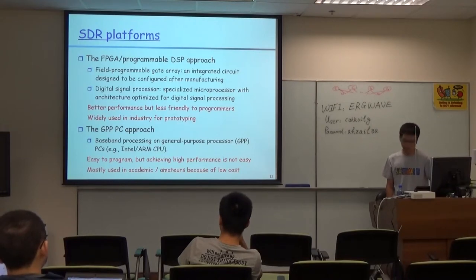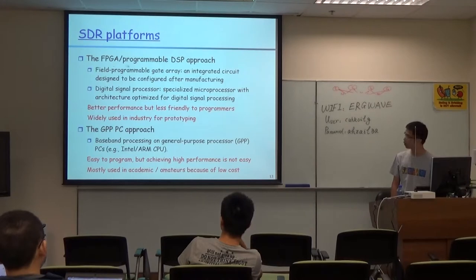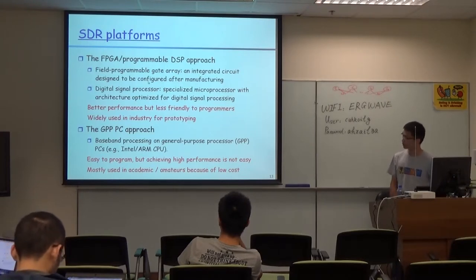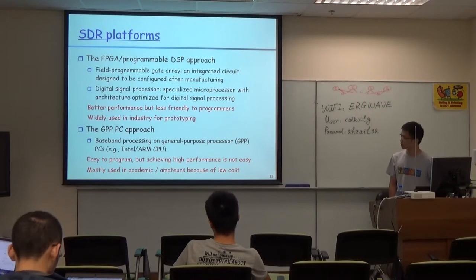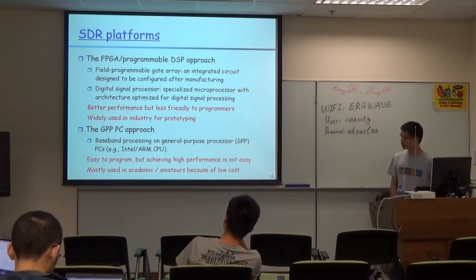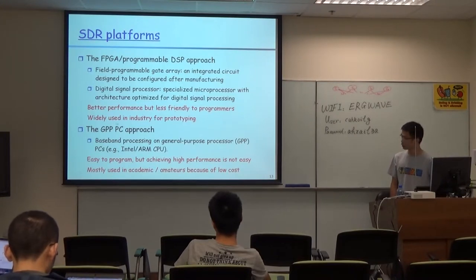There are many kinds of SDR platforms. Roughly speaking, they differ in the baseband processing parts. One kind is based on FPGA or programmable DSP. FPGA is an integrated circuit designed to be configured after manufacturing; DSP is a special microprocessor with architecture optimized for digital signal processing. This architecture has better performance, but is less programmer-friendly and expensive — usually used in industry for prototyping.